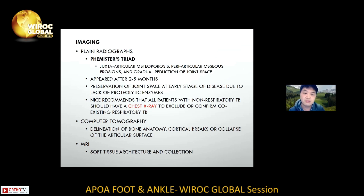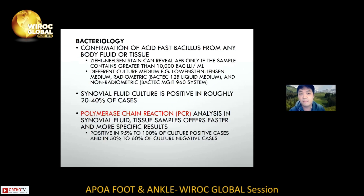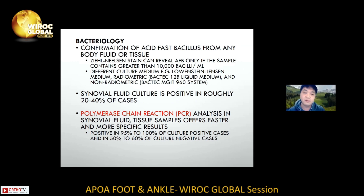A chest X-ray should be taken to exclude pulmonary TB. CT scan is useful for bony anatomy, cortical breaks, or collapse of the articular surface. MRI is useful for soft tissue assessment, including soft tissue swelling. Biochemical and hematological tests may provide supportive evidence — inflammatory markers may be elevated, and ALP may be increased for bony activity. Newer tests such as interferon-gamma release assays are available, but cannot differentiate active disease from latent infection. The gold standard remains bacteriology — smear microscopy and culture — although sensitivity is not ideal, with some reporting only 20 to 40% positive culture rates. PCR has better sensitivity and provides earlier diagnosis.